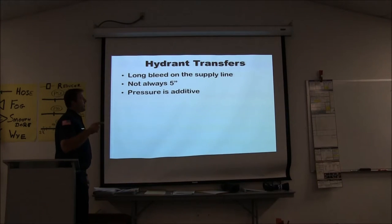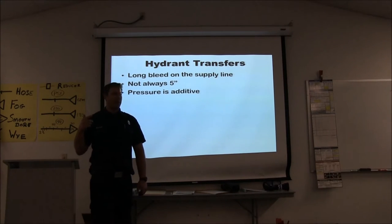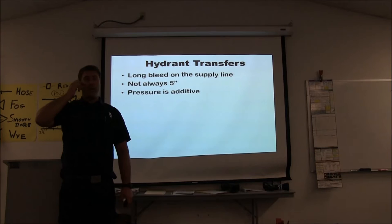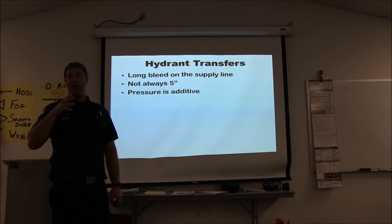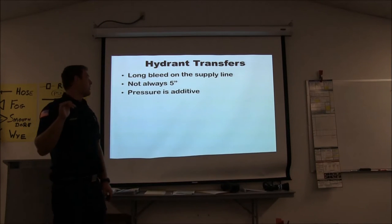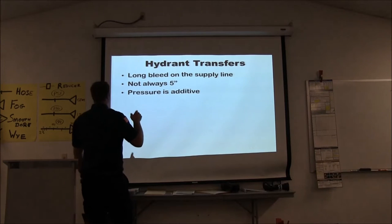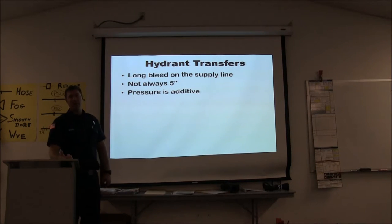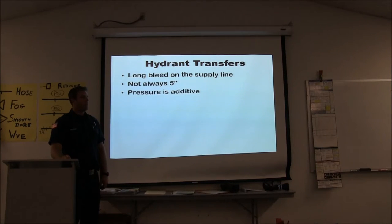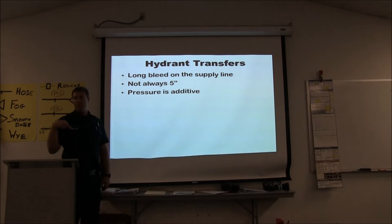On hydrant transfers, if you've got a 500-foot lay with five-inch, that's a lot of air to bleed out before doing your hydrant transfer — air pushing through the pump causes problems. Remember, we don't always have to use five-inch; we can get about 1,000 GPM through three-inch. For a dumpster fire, car fire, or small house fire, just run three-inch. If you connect three-inch to the hydrant, put the valve on the other side so you can add another three-inch if needed — you could lay dual three-inch lines.